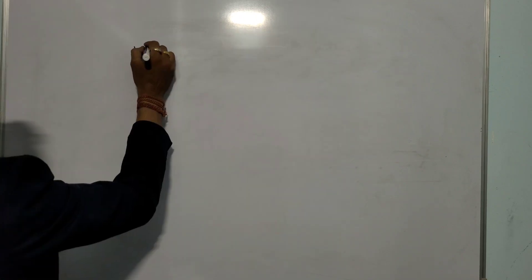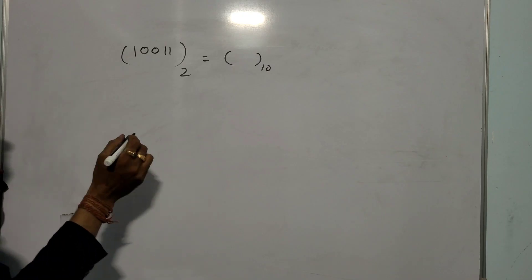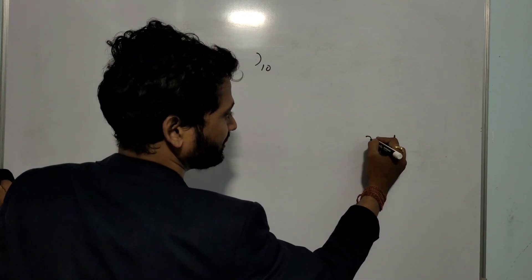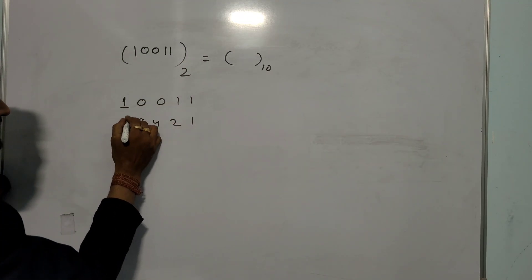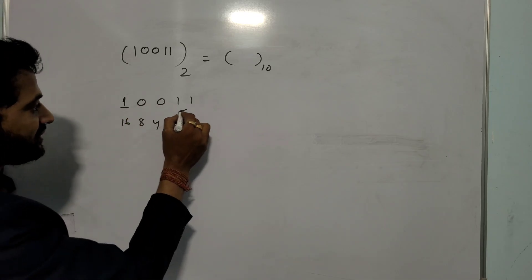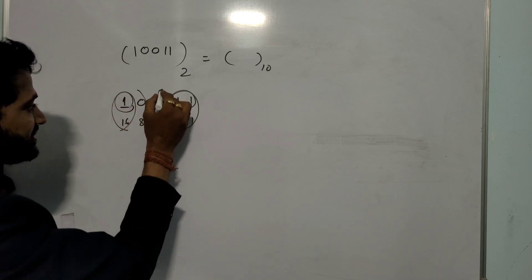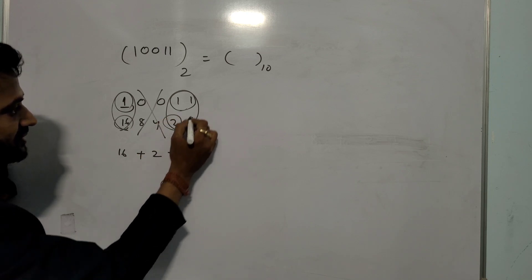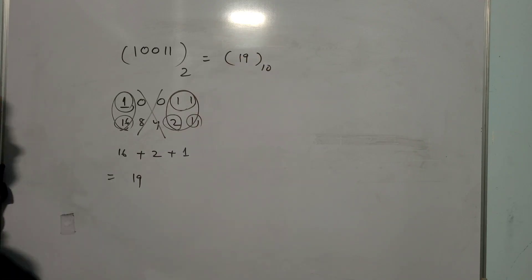Another example: 10011. What is the decimal value? I have told you, write this one: 1, 2, 4, 8, and 16. And you take the high values or 1. There is one, you take this one only and you cross this part. So this value 16 plus this value 2 plus 1 equals 19. That is why the answer is 19.